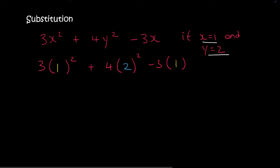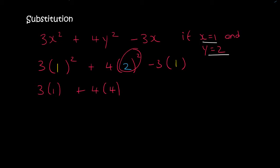You then just work this out. 1 to the power of 2 is the same as 1 times 1, so that's just going to equal 1. 2 to the power of 2 is 4, so that will just be plus 4, and then that will just be minus 3. Now this just becomes 3, 4 times 4 is 16, minus 3. 3 plus 16 is 19, and 19 minus 3 is 16.